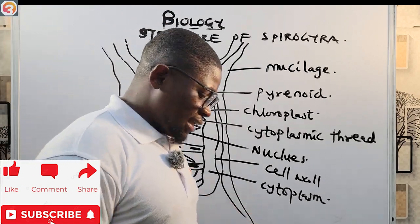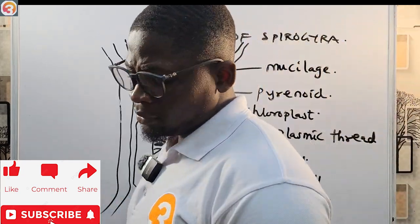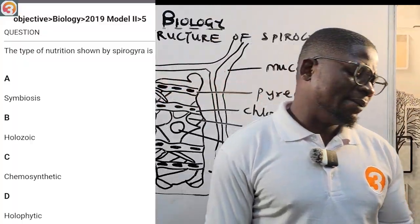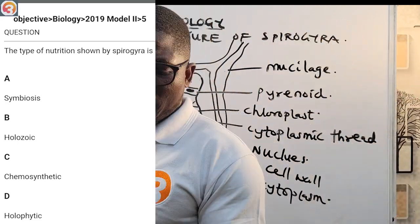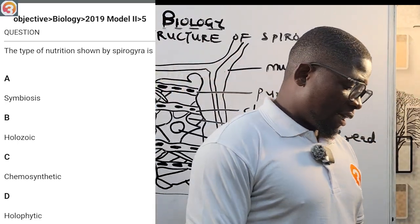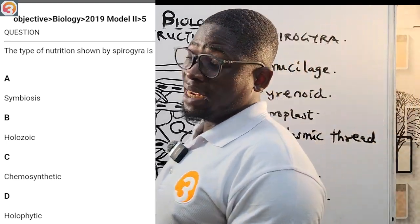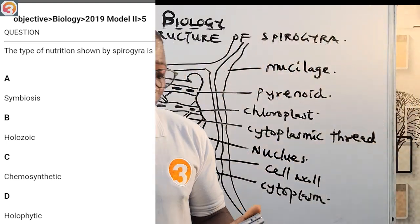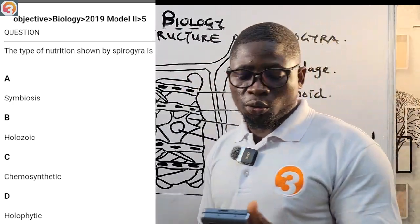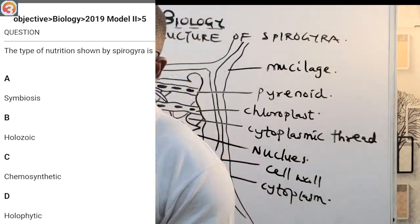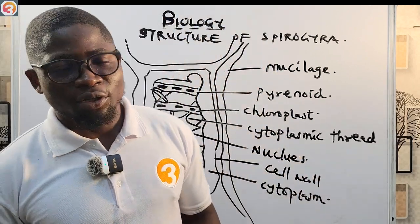Let's quickly look at a question from O3 Schools concerning Spirogyra. The question says: the type of nutrition shown by Spirogyra is — A: symbiosis, B: holozoic, C: chemosynthetic, D: holophytic. This is a 2019 question number five. We will come back to this question at the end of the class, so please stay put and enjoy yourself.